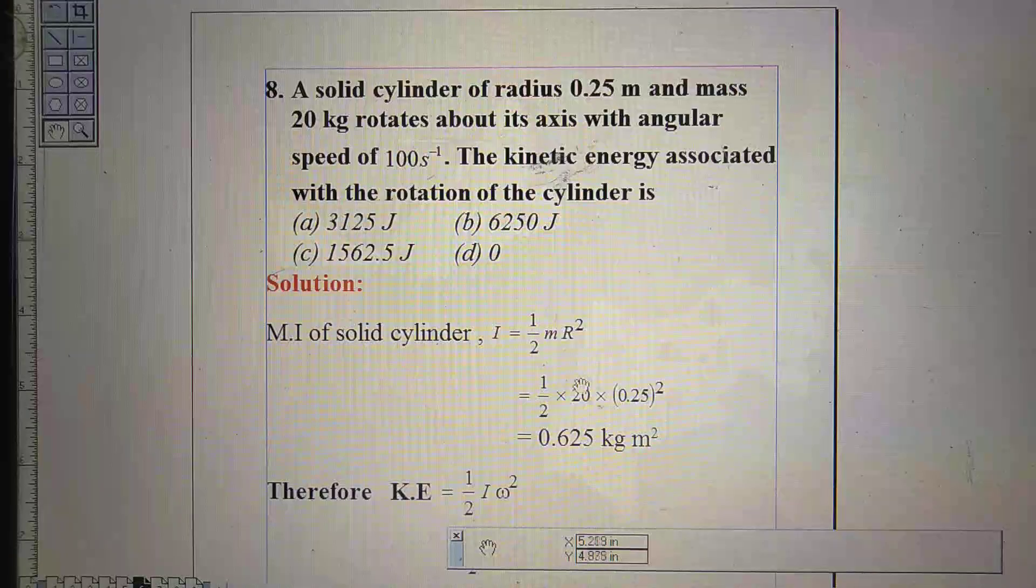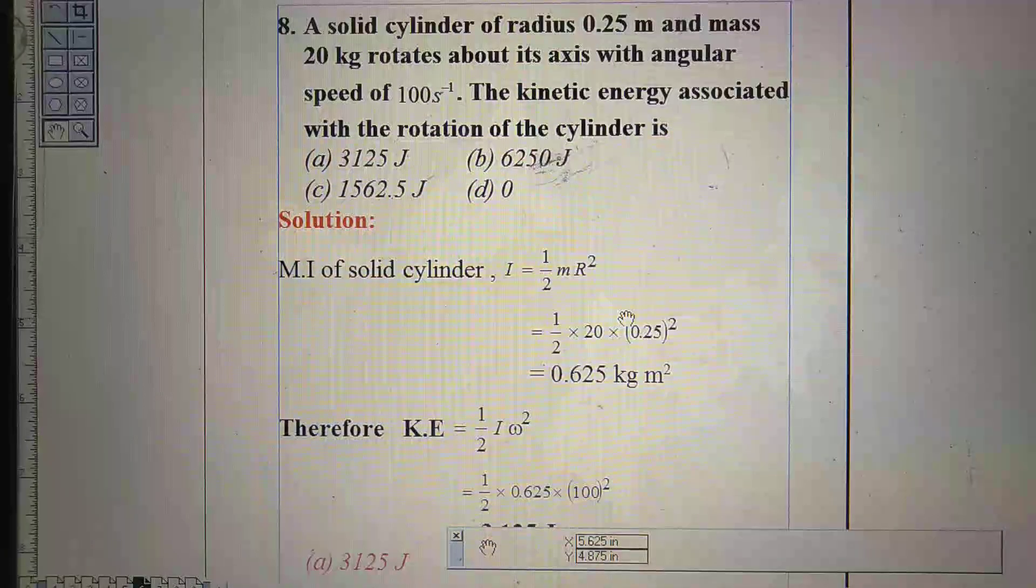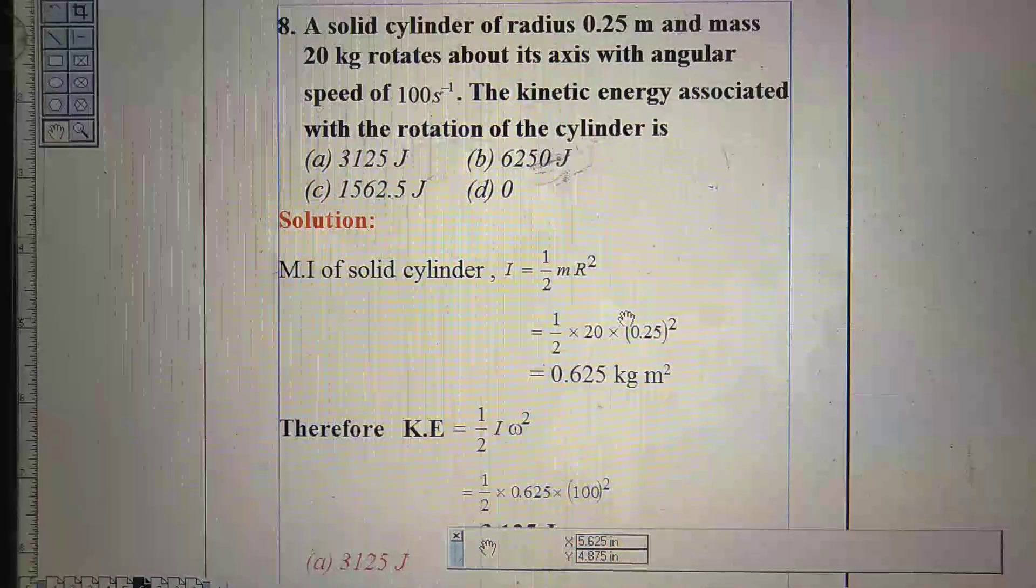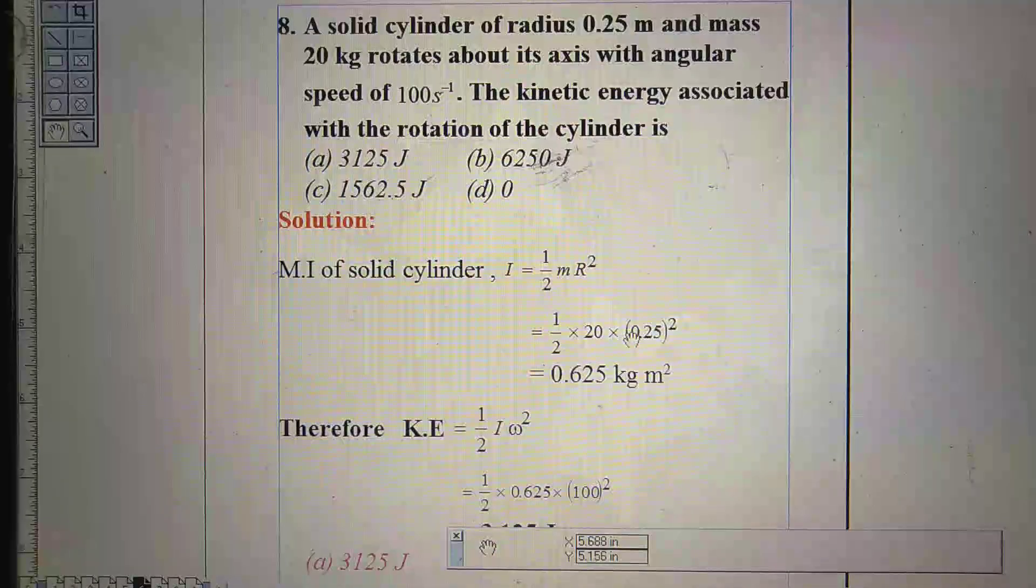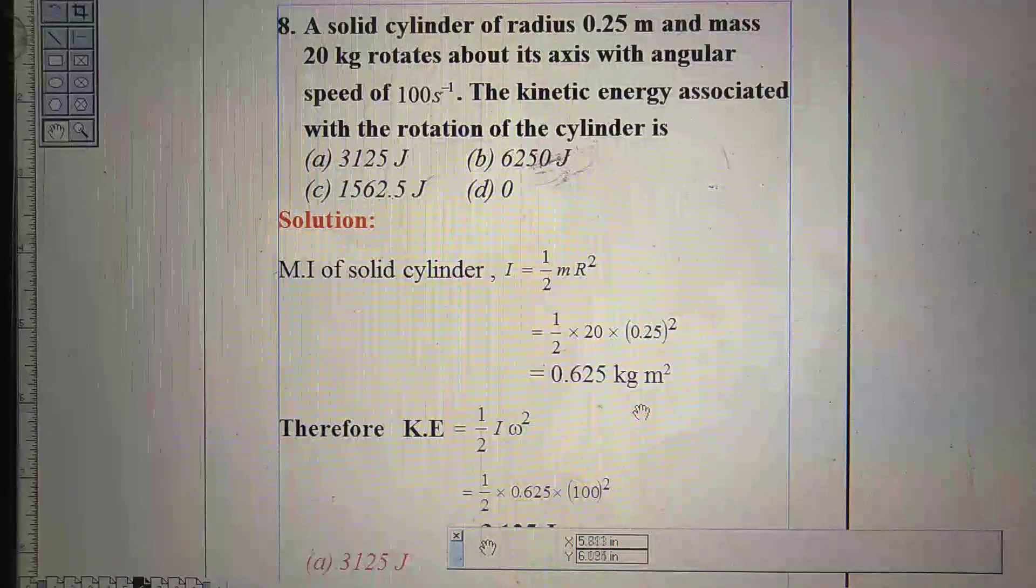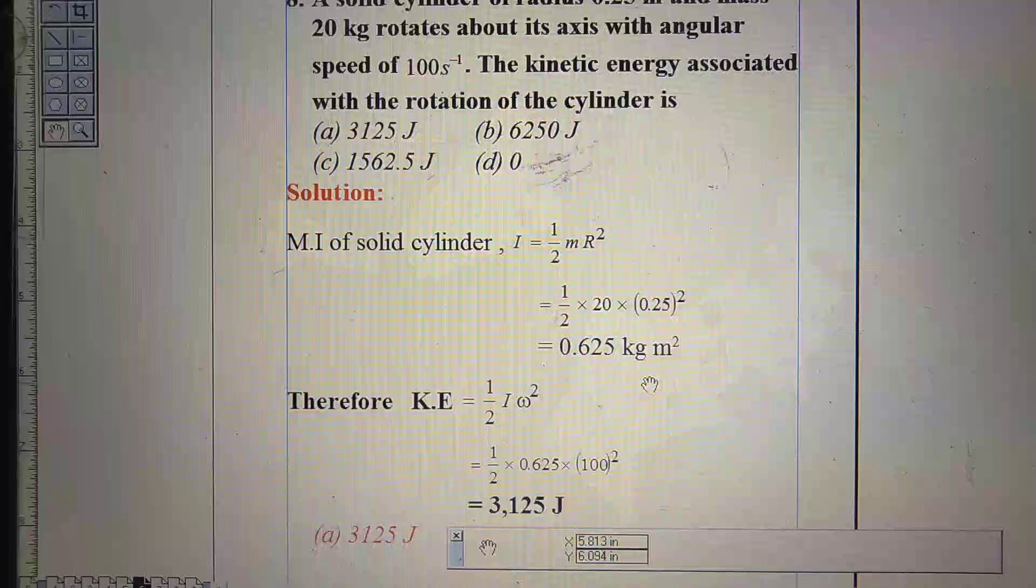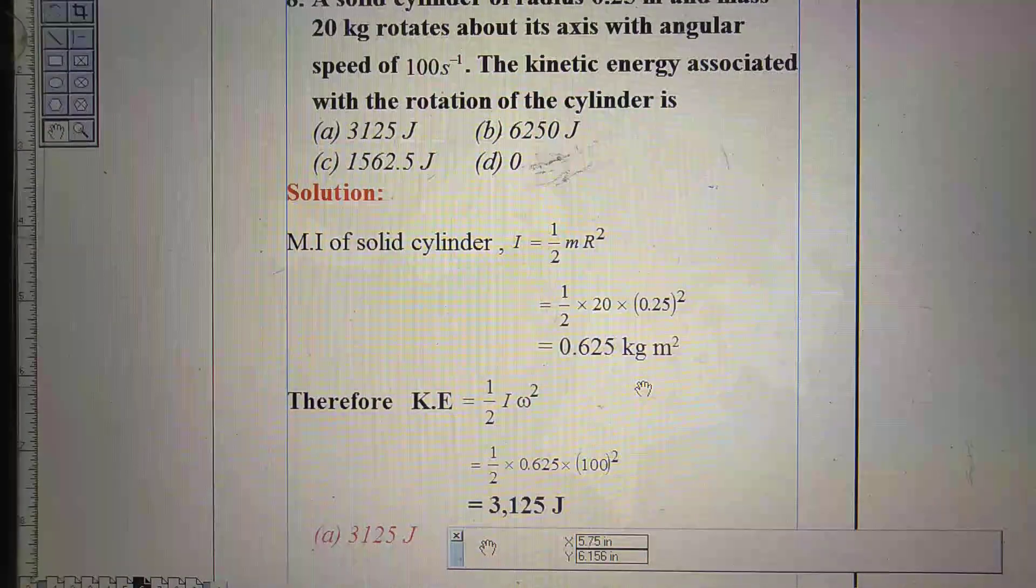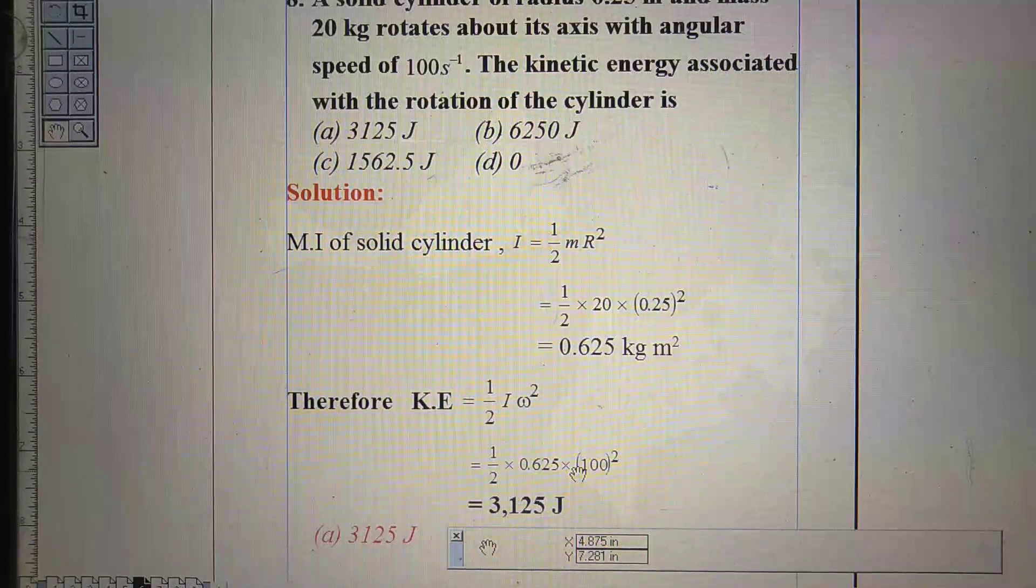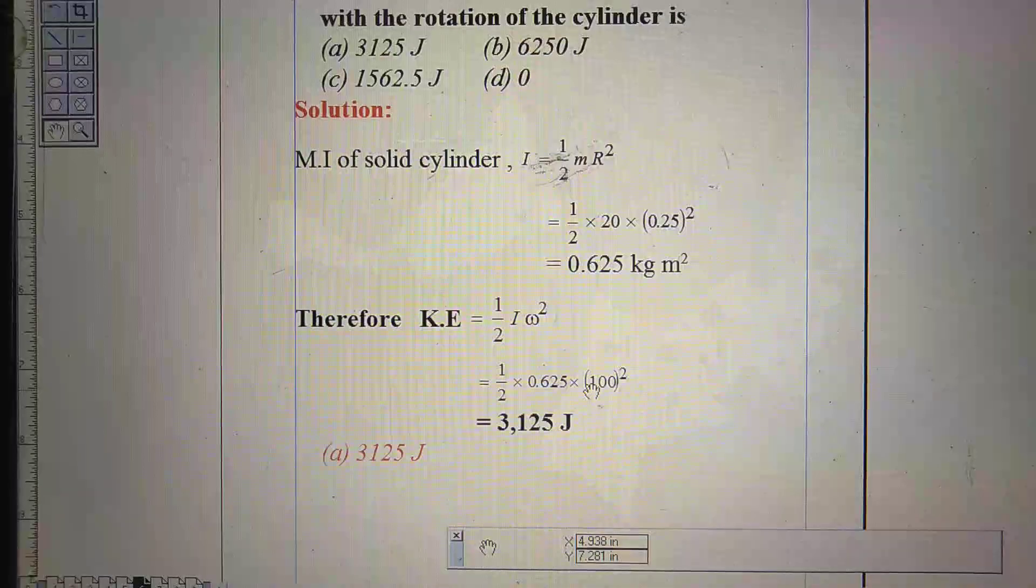How can we solve this one? First of all, moment of inertia of solid cylinder is half m r square, where m is the mass of the cylinder and r is the radius. We insert the values of the cylinder and radius. After calculation, we found I equal to 0.625 kg meter square. Now, we have to find out the rotational kinetic energy.